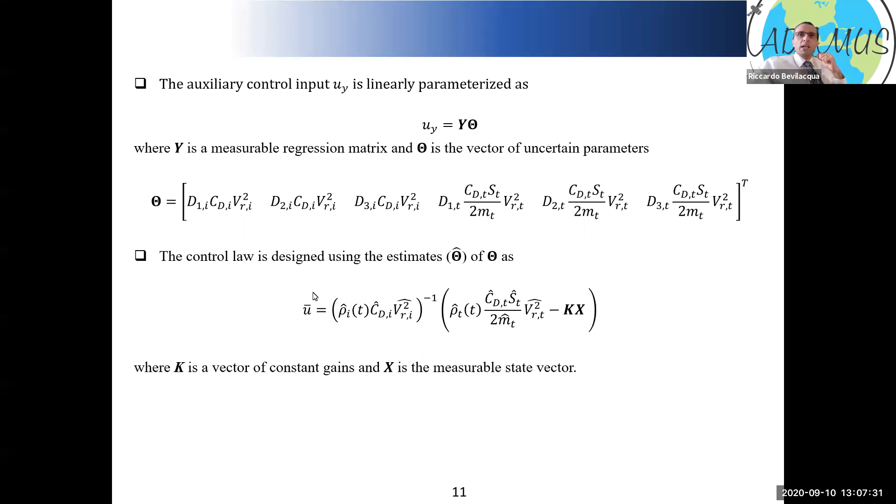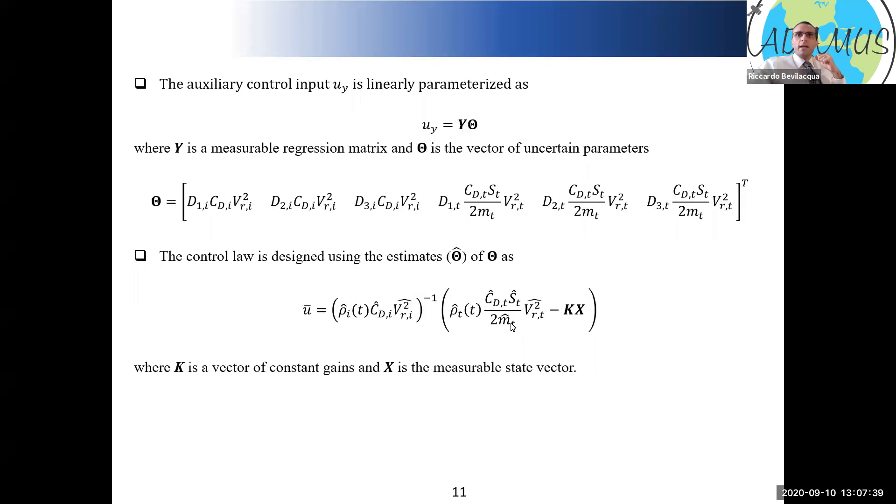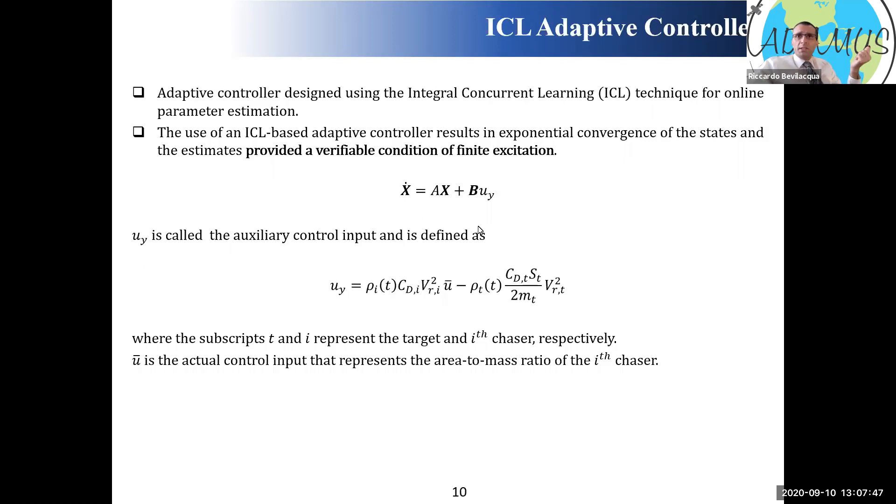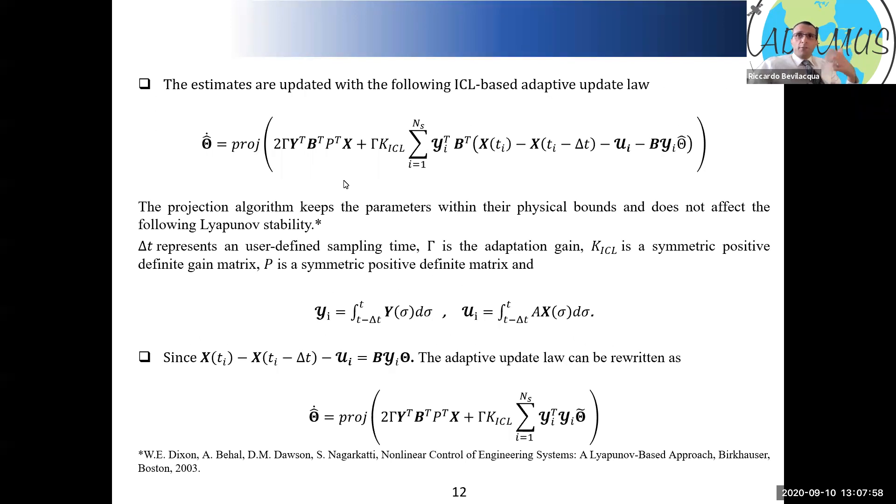Everything from now on that has a hat is indicating an estimate of this theta vector. We start proposing that the control law is, this expression is basically coming from the differential drag solving for mu bar and considering that we have a linear system as a reference. This kx term is coming from a simple LQR problem applied to this linear dynamics. For now, this is basically all put together with estimates, because that's really what we have, the estimates of the unknown parameters.